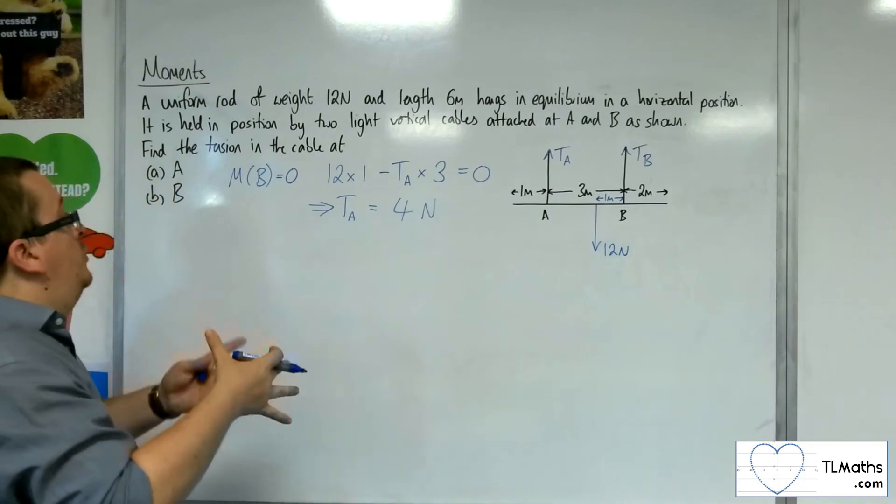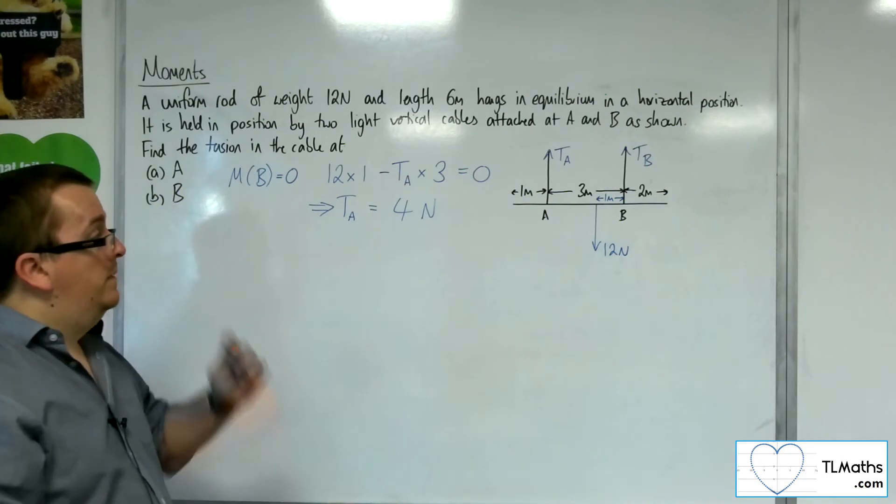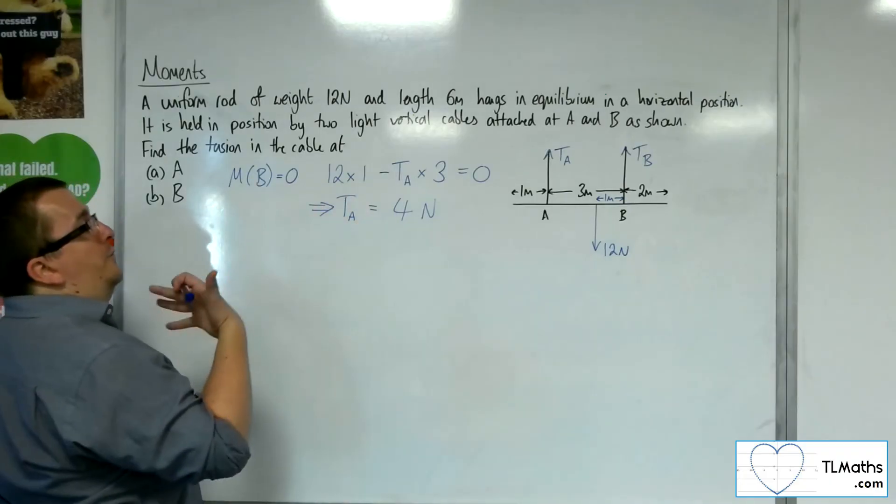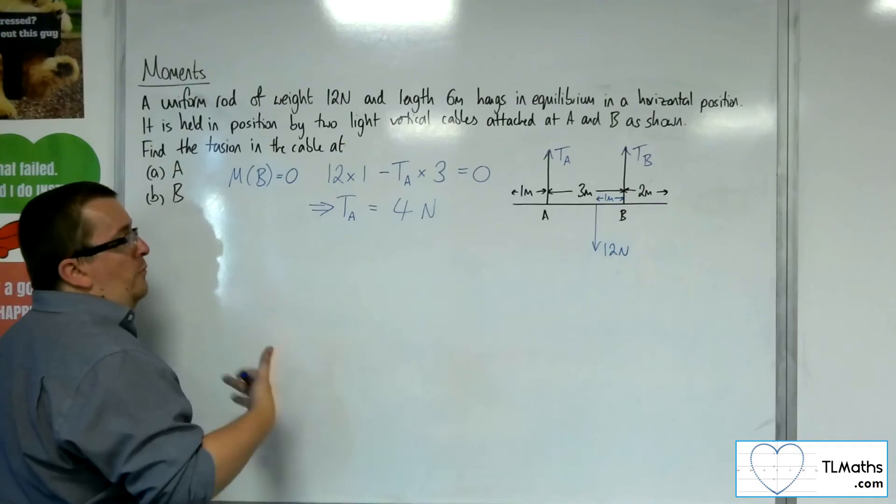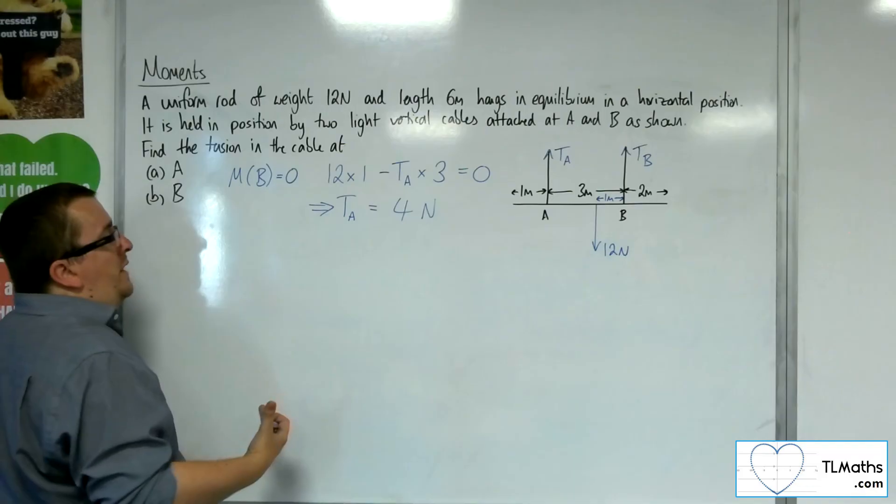Now, at this point, I could find the tension of the cable at B by taking moments about A in a very similar way, or I can find the resultant force. Well, the resultant force is 0, but using that, I can find T_B. So I'm going to do that.